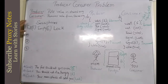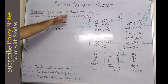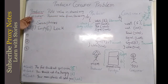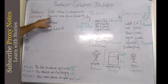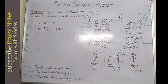Simply, a producer is a function or a process that puts a value in a shared array, and a consumer is a process which removes or eats that value from that shared array.